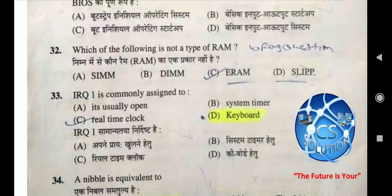Option C: ERAM stands for Enroute Automation Modernization — it is an air traffic control system designed to allow faster processing of route requests and in-flight route changes. Option D: SLIP stands for Serial Line Internet Protocol. Both option C and option D are not types of RAM. If you have this question in your paper, the answer will be in the answer key — C and D.